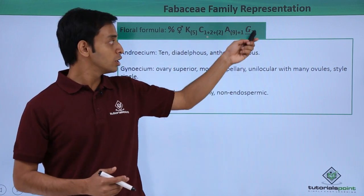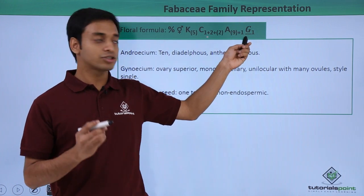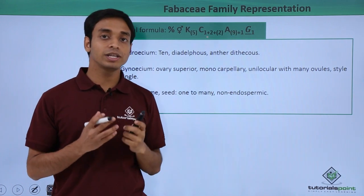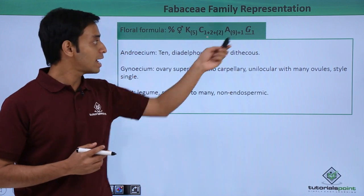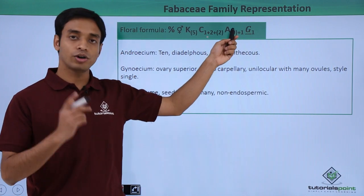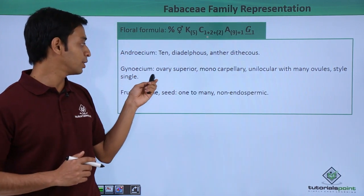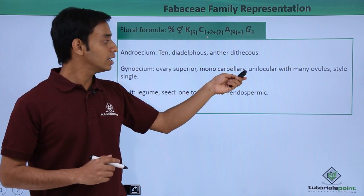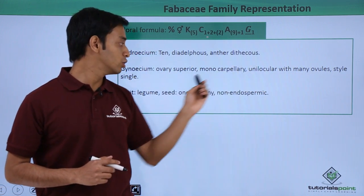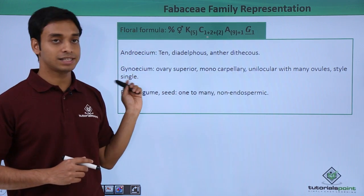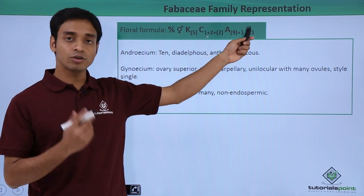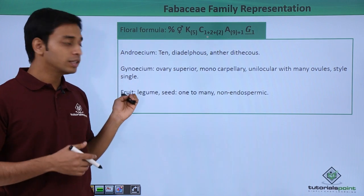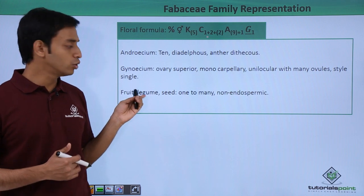Let's talk about the gynoecium, which is the female reproductive structure represented by 'G'. There is a dash below the G, which means the ovary is superior. One means only one ovary is present. The ovary is superior, monocarpellary, unilocular with many ovules, and the style is single.